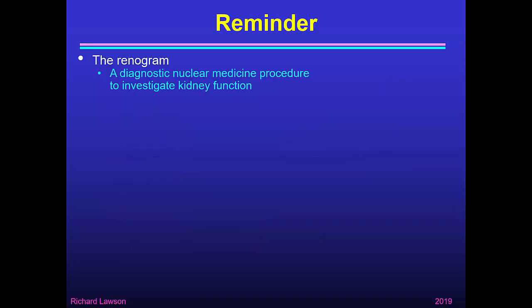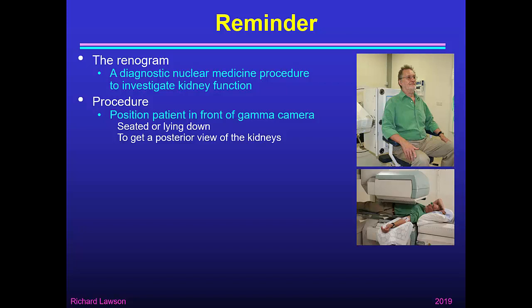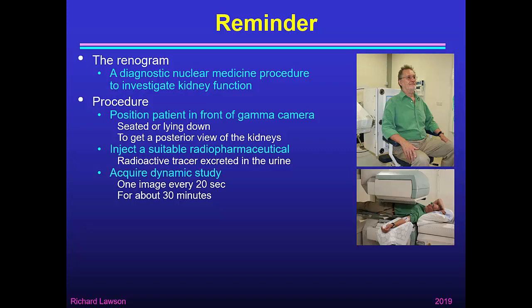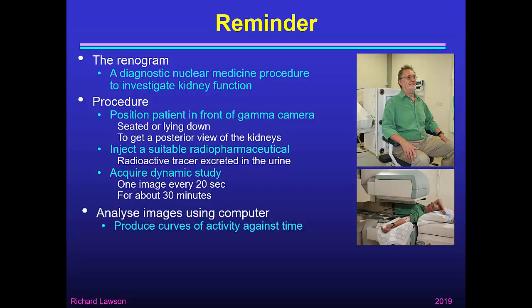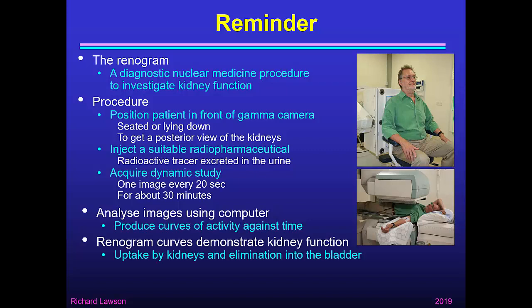Just a reminder that the Rhenogram is a diagnostic nuclear medicine procedure used to investigate kidney function. We position the patient in front of a gamma camera, either seated or lying down, with the aim of getting a posterior view of the kidneys. Then we inject a suitable radiopharmaceutical — a radioactive tracer that's excreted in the urine — and we acquire a dynamic study, typically one image every 20 seconds for about 30 minutes. We then analyse those images using a computer to produce curves of activity against time. Those curves are the Rhenogram curves, and they demonstrate kidney function — both uptake by the kidneys and elimination from the kidneys into the bladder.